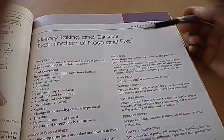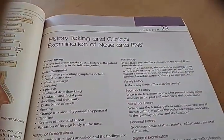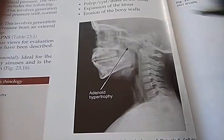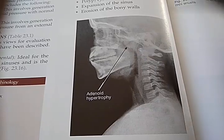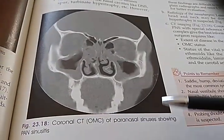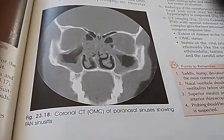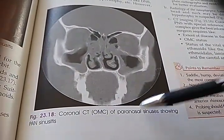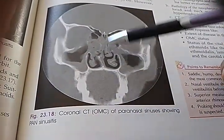After anatomy and physiology, they discuss history taking and examination. This is showing adenoid hypertrophy in the nasopharynx, and here you have a coronal CT showing osteomeatal complex — paranasal sinuses showing pansinusitis.